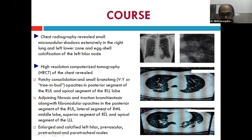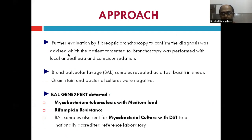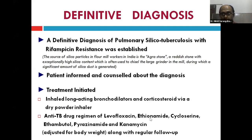HRCT chest showed short patchy consolidation, branching tree-in-bud opacities in the posterior segment of the right upper lobe and apical segment of the right lower lobe, adjoining fibrosis, traction bronchiectasis, fibronodular opacities extensively in the right lung, and apical segment of the left lower lobe, with enlarged and calcified left hilar, pre-vascular, retrotracheal, and paratracheal nodes. A definitive diagnosis of TB had not yet been established since tree-in-bud opacities can also occur in viral infections and bronchiolitis. Fiber-optic bronchoscopy was performed under local anesthesia and conscious sedation. Bronchial lavage GeneXpert was positive — MTB detected, medium load, with RIF resistance. Samples were sent for mycobacterial culture and DST to a nationally accredited reference laboratory.